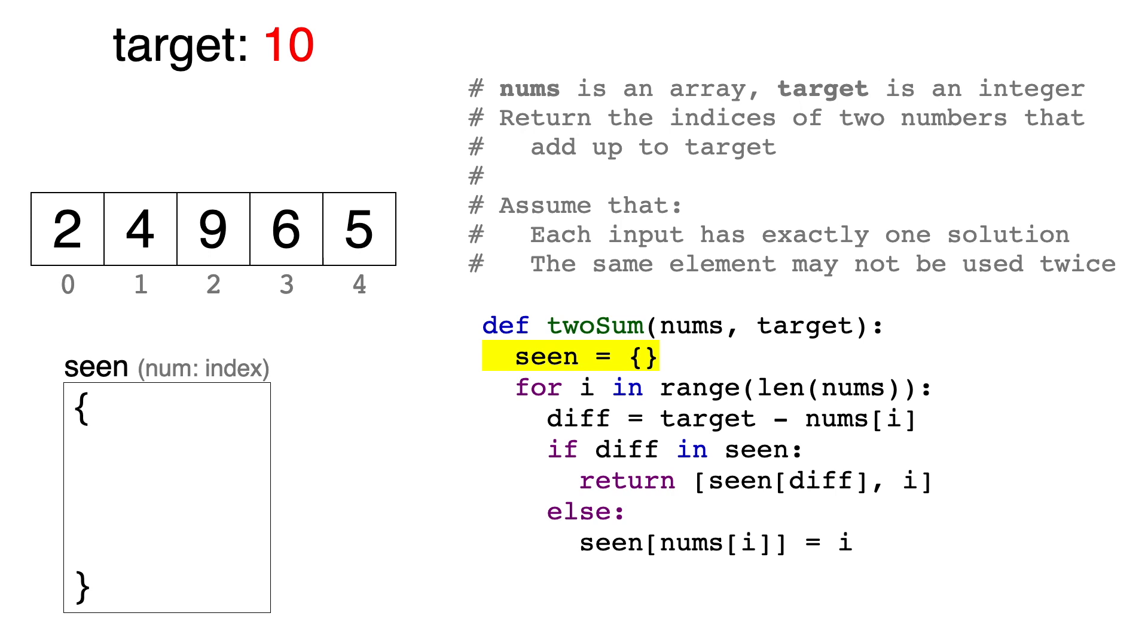Since ultimately, we need to return the indices of the numbers, the dictionary key will be the number itself, and the dictionary value will be its index. We'll then start the loop at index 0, so the current number is 2.